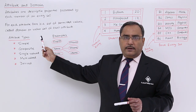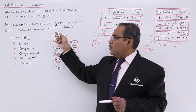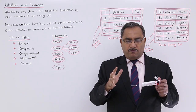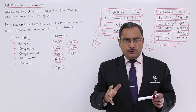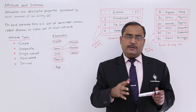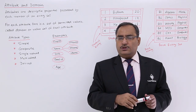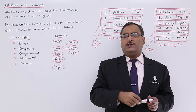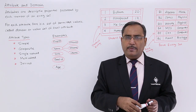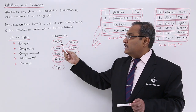The last topic is domain. What is domain? For each attribute, there is a set of permitted values called the domain or value set of that attribute. Domain is a pool of values from which we can pick one value to instantiate one attribute. Instantiating an attribute means initializing it, and during implementation it will occupy some memory space in the computer's memory.